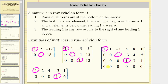Again, each leading one in any row occurs to the right of any leading one above. I do want to make a special note that some sources do not require that the first non-zero element in each row be equal to one in order to be in row echelon form. However, this is the most common definition, which is what we will use.